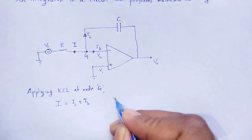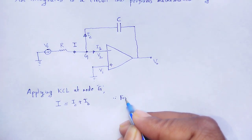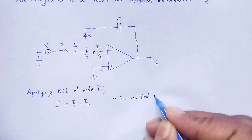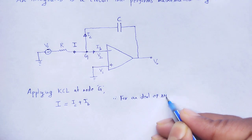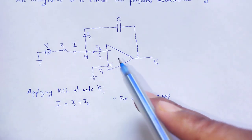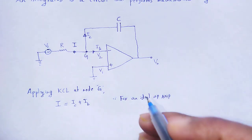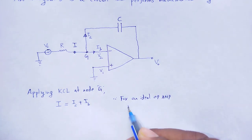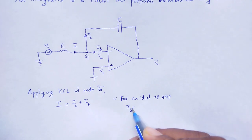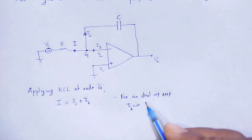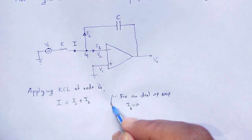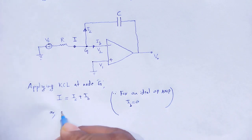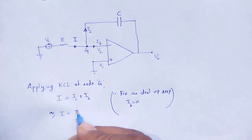For an ideal OPAM, it provides infinite input impedance. Therefore, the current through the OPAM will be zero — no current through the OPAM. So I is equal to IC.